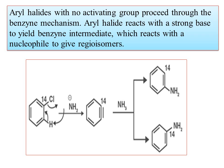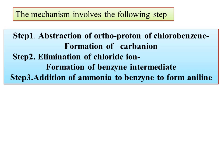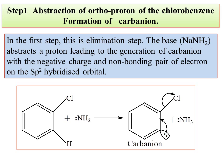Aryl halides, when made to react with a strong base, give regiochemically specific isomers by using different nucleophiles. The second step is the benzyne intermediate. First, there is the abstraction of the ortho proton of chlorobenzene — carbanion formation. If you look at sodium amide, Na+ NH2-, the NH2- base is going to abstract the hydrogen to form ammonia, leaving a carbon with a negative charge.